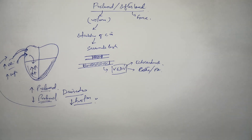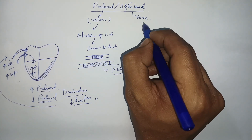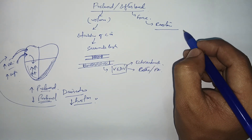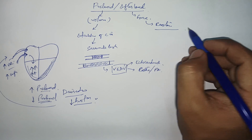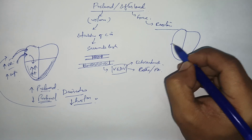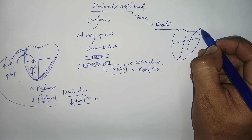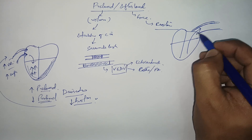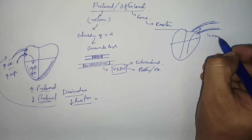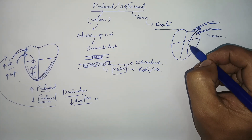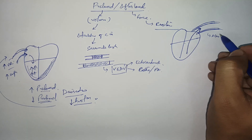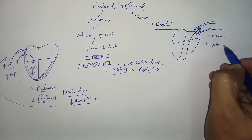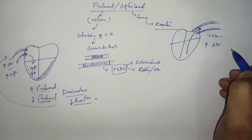Afterload is the force or the resistance the heart must overcome to circulate blood to the system. For example, from the left ventricle, blood goes through the aorta to the system. If the aortic walls are thickened, as in atherosclerosis, the heart has to work even harder to pump blood into the system — so afterload is increased by atherosclerosis.